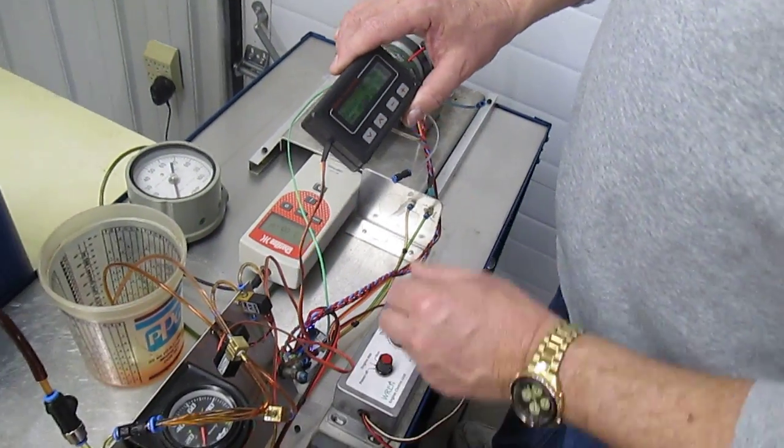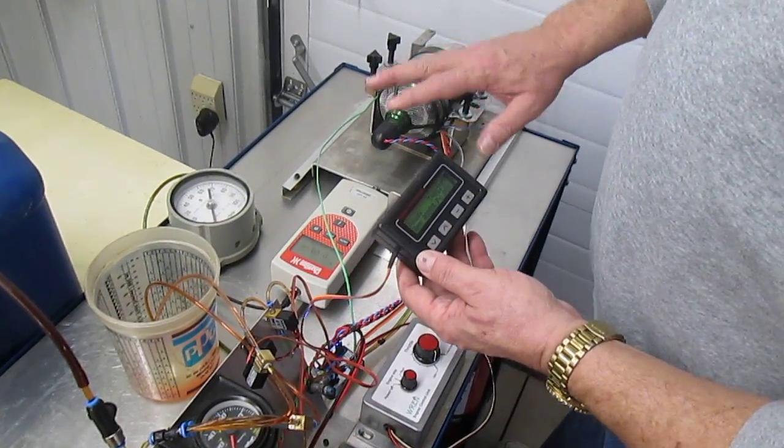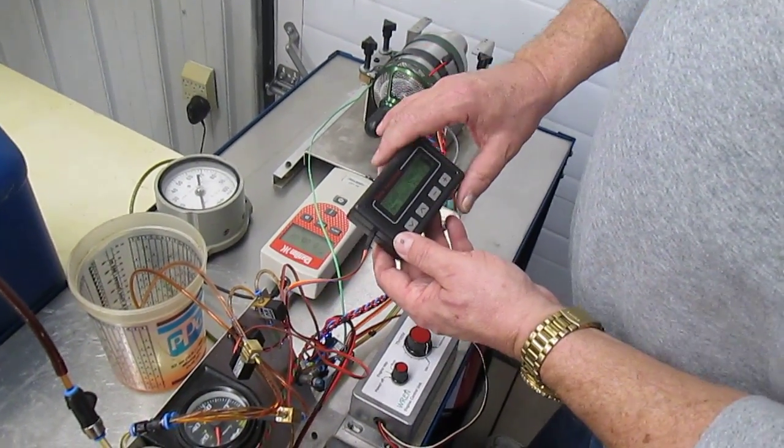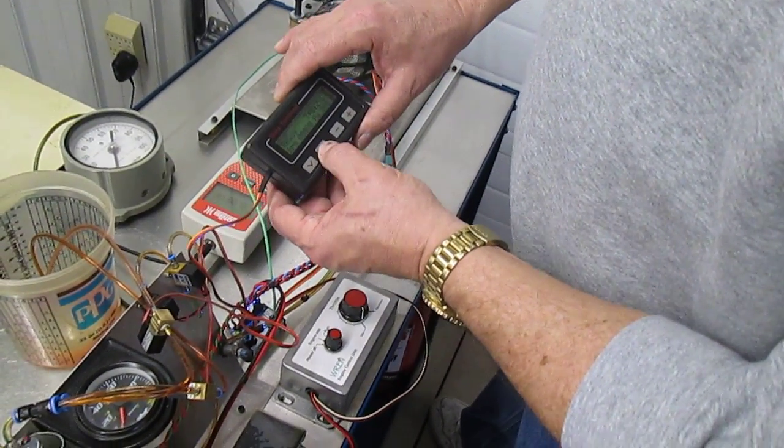Now, next thing we want to do is prime the fuel pump and get all the air out of the lines to the motor. That'll really make the starts a lot easier in the beginning, especially if you've already got the motor installed into an airplane.